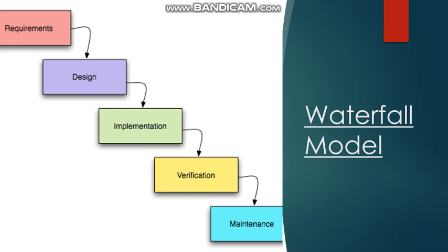In the waterfall model, first requirements are gathered, then they move to the second phase — the design phase. The design phase emphasizes the UI design of the application, like where buttons, text, and labels will be present. After that, coding is performed as part of the implementation phase by the developers.